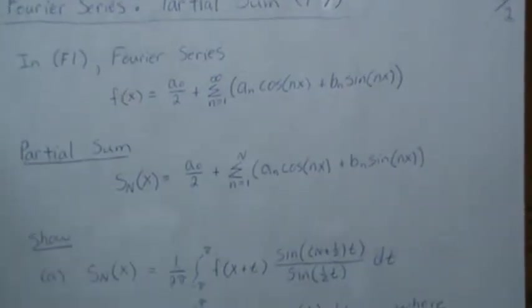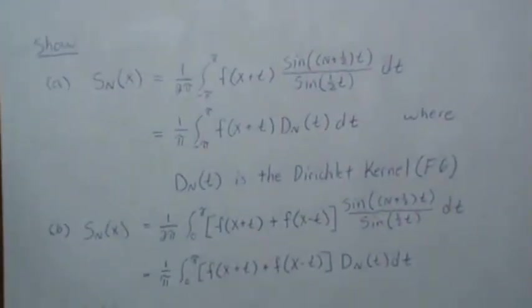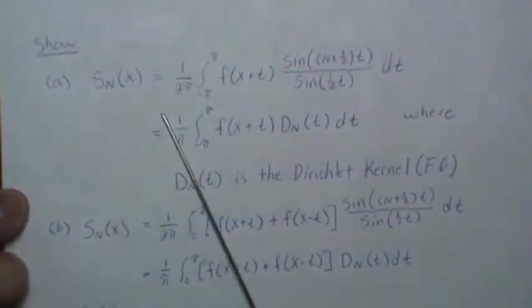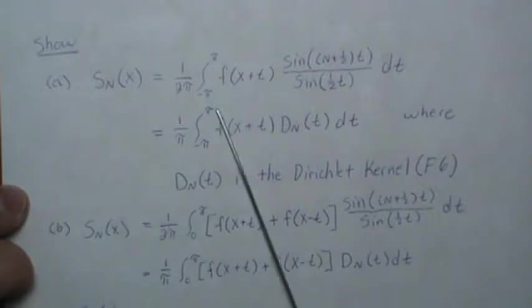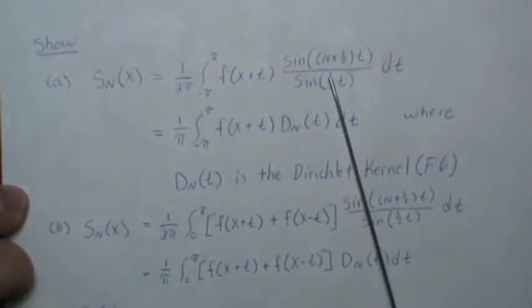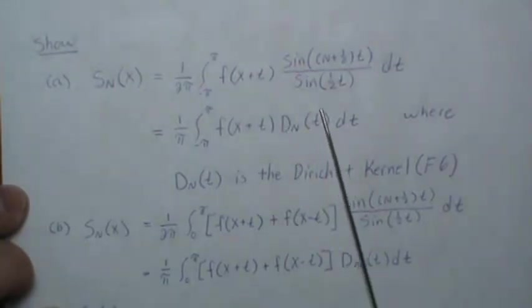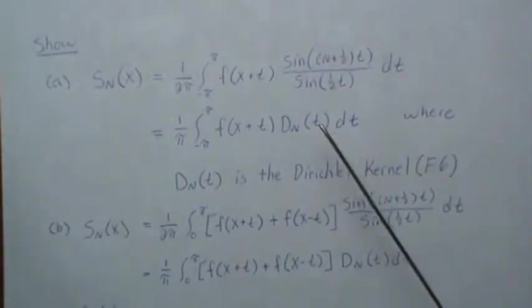Those two identities are this A and B, where the partial sum can be rewritten like this. And then this, if you take that two into this, is called the Dirichlet kernel.